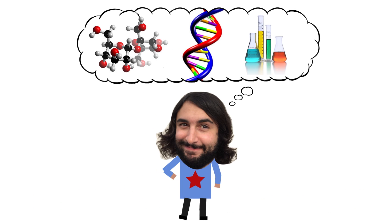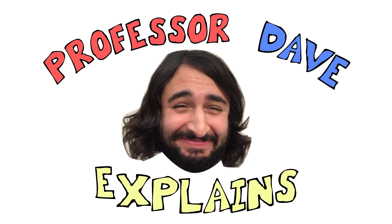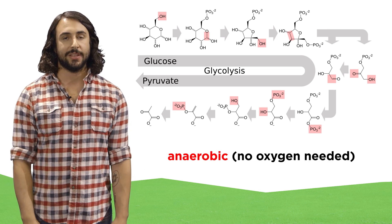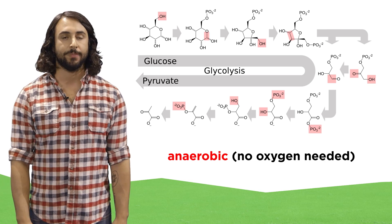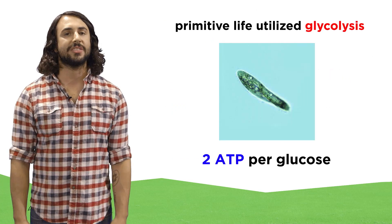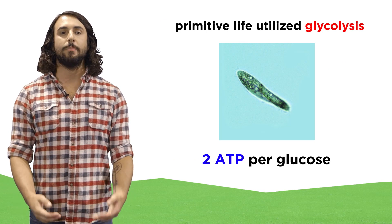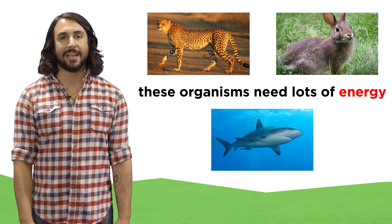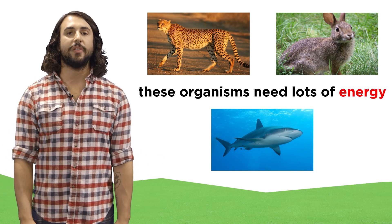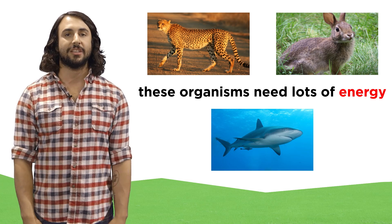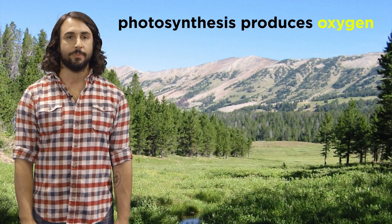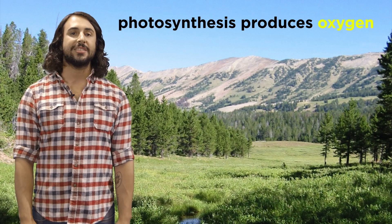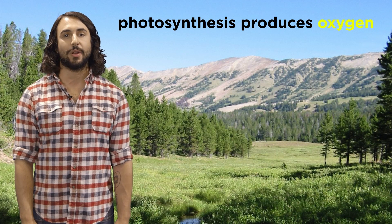Professor Dave again. Let's talk about the citric acid cycle. We learned about glycolysis, which is an anaerobic process, meaning it does not require oxygen to occur. Since oxygen is not necessary, the first simple organisms on earth were able to generate energy through glycolysis for millions of years. But two ATPs per glucose just isn't that much. In order for higher organisms like animals to evolve that can run and jump and swim, they had to evolve additional metabolic pathways that generate far more energy than glycolysis. This became possible once plants covered the earth, thereby filling the atmosphere with oxygen, which is a product of photosynthesis. Thus the possibility for large-scale oxygen-dependent aerobic respiration was born.